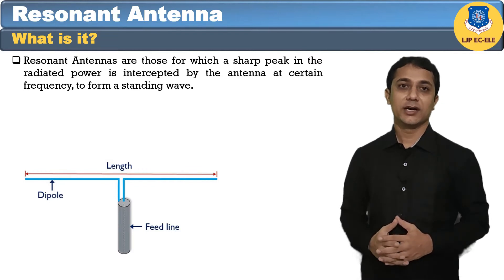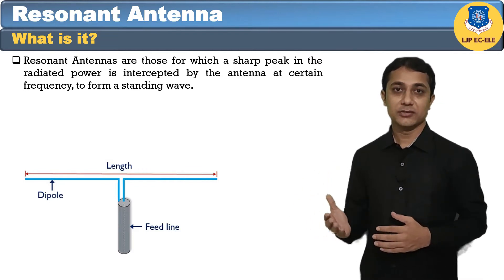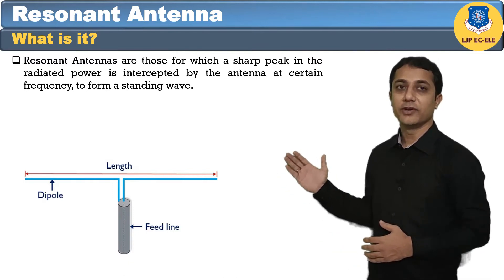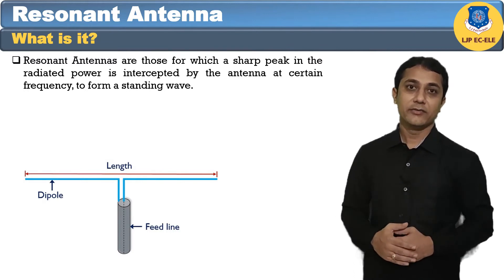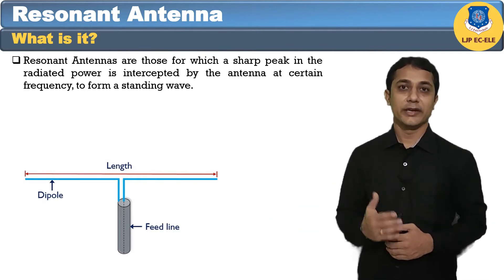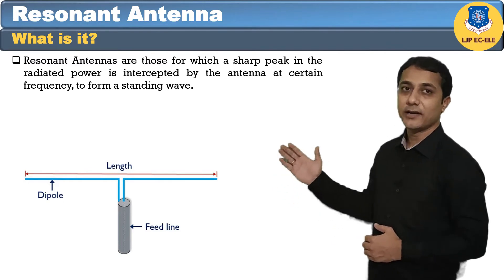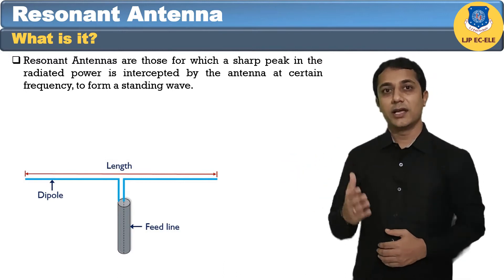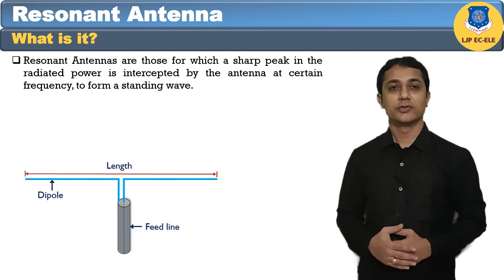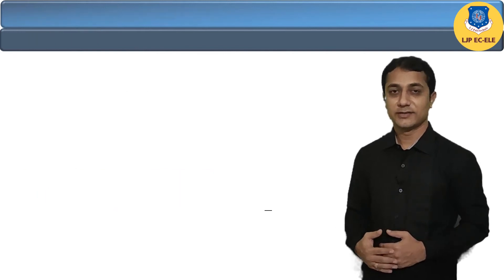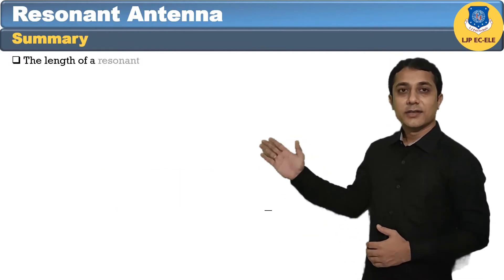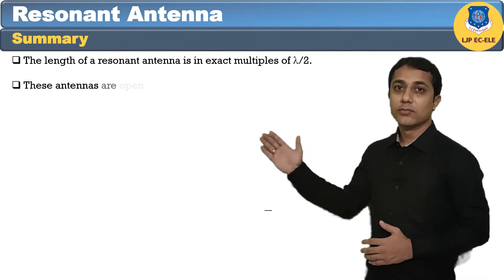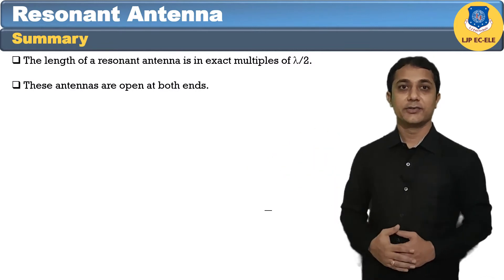The resonant antenna are periodic in nature. They are also called bi-directional traveling wave antennas, as the radiative wave moves in two directions, which means both incident and reflected waves occur here. In this antenna the length and frequency are proportional to each other. To summarize: antennas having a length that is a multiple of lambda by two and open at both ends are said to be resonant antennas.